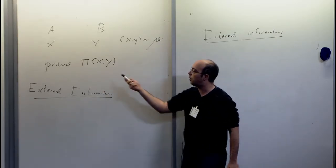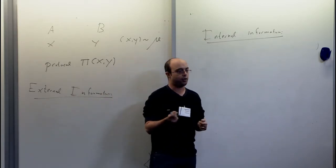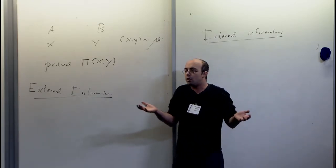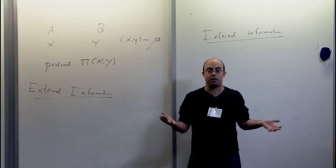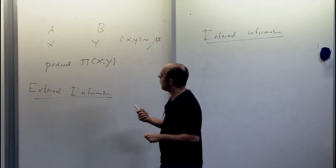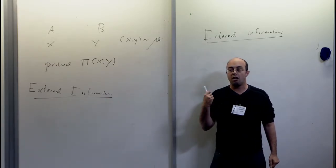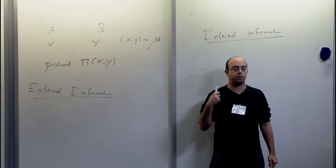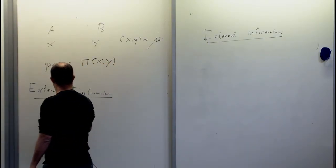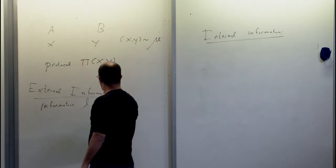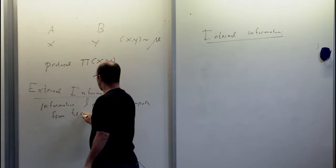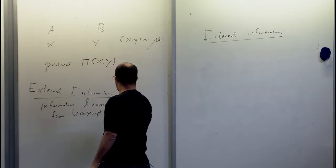One way to make a very redundant protocol is for each player to first send tons of random bits — a very long protocol that says nothing useful, telling them nothing about their inputs. So one way to define information is to ask how much an external observer learns about the players' inputs from the transcript they see.